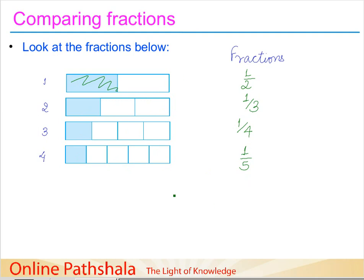But what happens when we have fractions like three by ten and five by sixteen? This makes it a bit difficult to compare, and if we try to do it visually it may not be convenient. For that purpose we need to develop a systematic way to compare fractions.